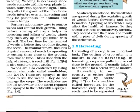Weeds are also controlled by using certain chemicals called weedicides. These are sprayed in the field to kill the weeds and they do not damage the crops. The weedicides are diluted with water to the extent required and sprayed on the fields with a sprayer. Weedicides are sprayed during vegetative growth of weeds, before flowering and seed formation.